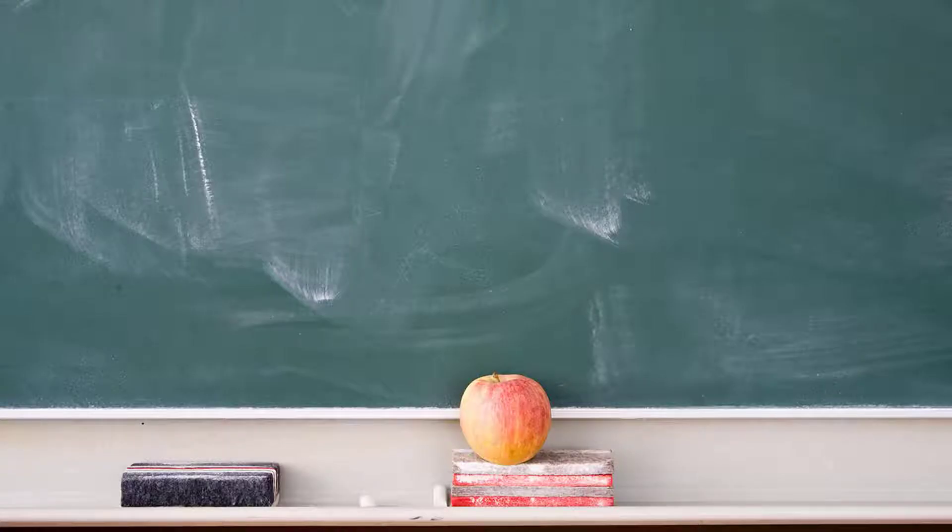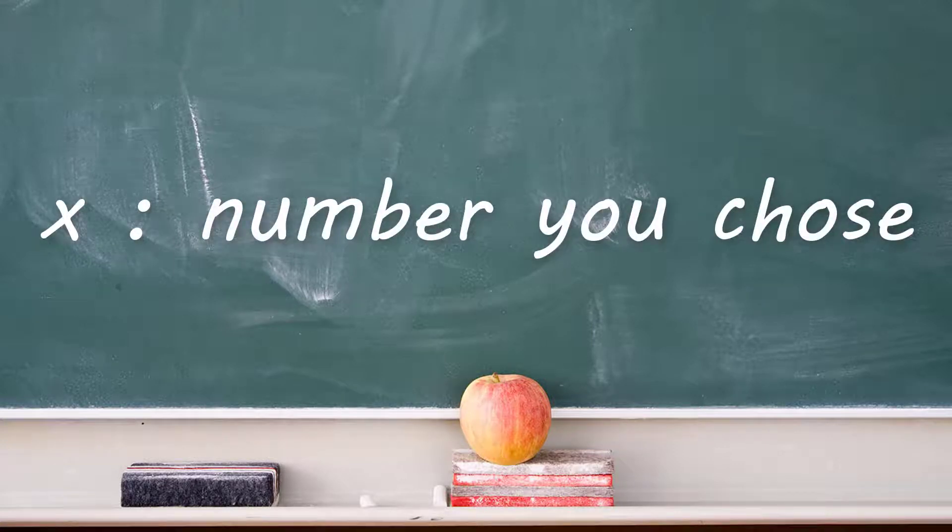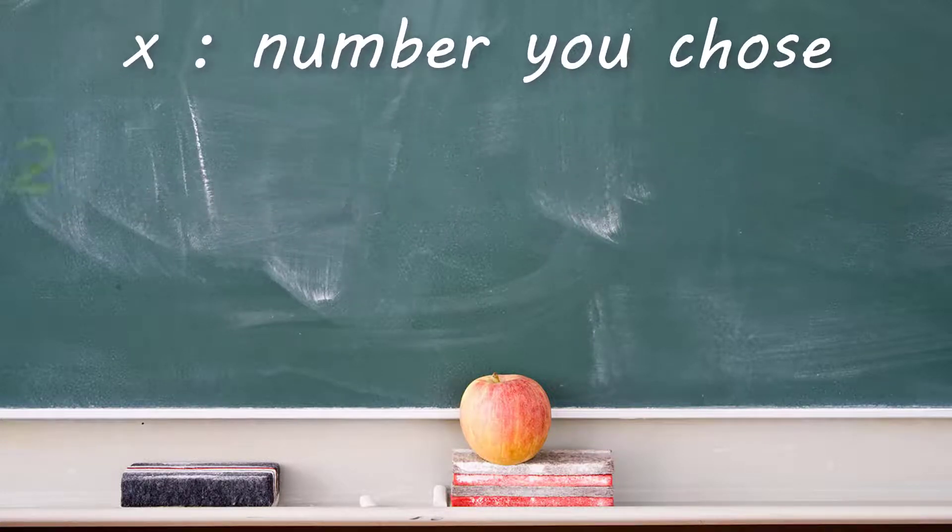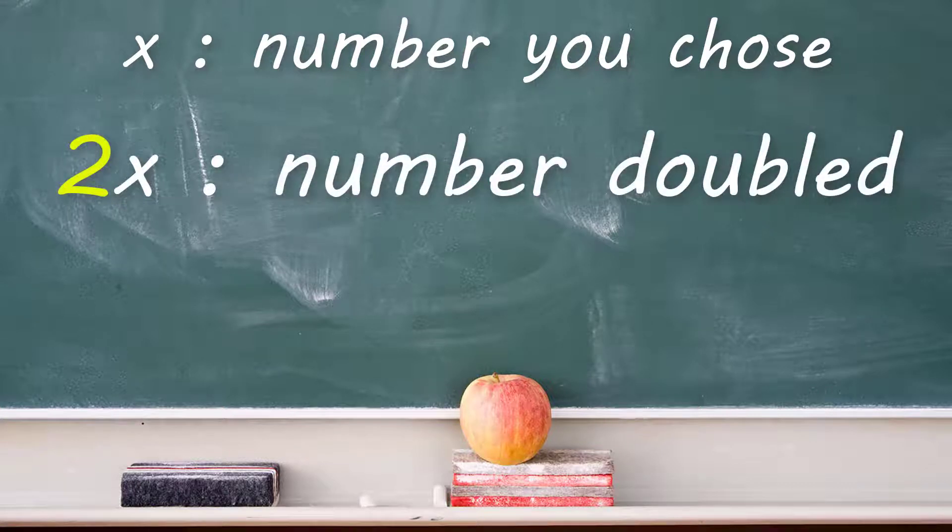Here's why it always works. Let's assign your unknown number as x. When doubling your number, we represent it mathematically as 2x, or 2 times x.